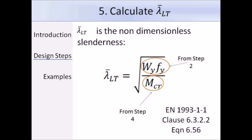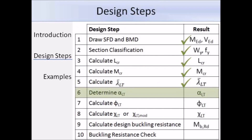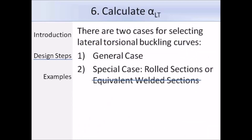The next step is to get alpha LT, and it's important to decide at this point whether to use the general case or the special case for rolled sections. The general case can be used for all sections, but if you have a rolled section it is often better to use the special case since it provides significantly more resistance. In the UK National Annex, we are told to use the general case method for equivalent welded sections, so in the UK the special case only applies to rolled sections.